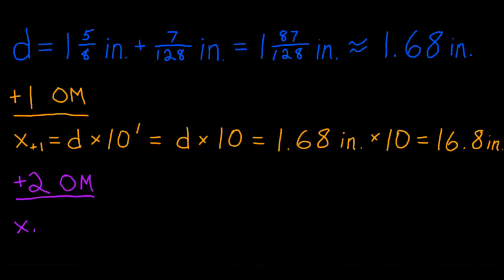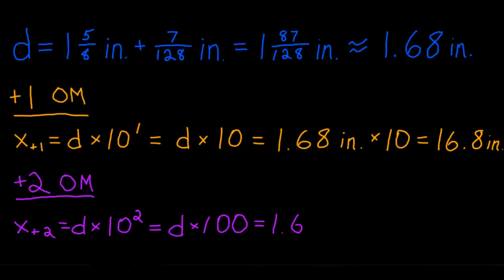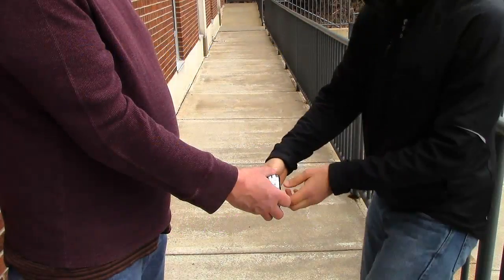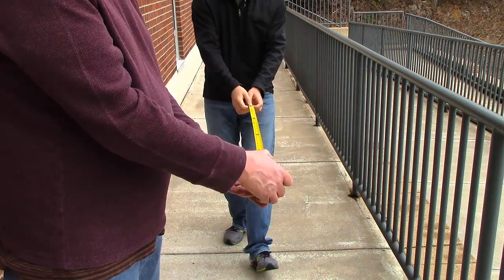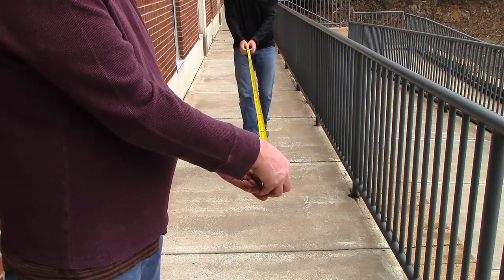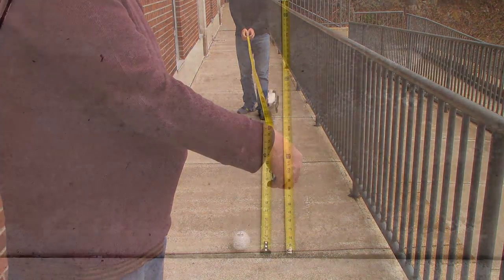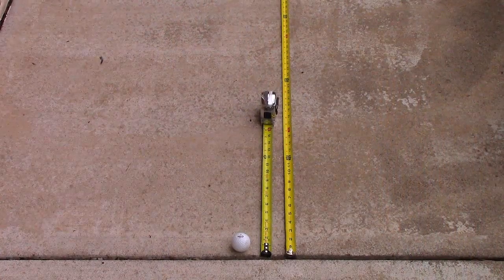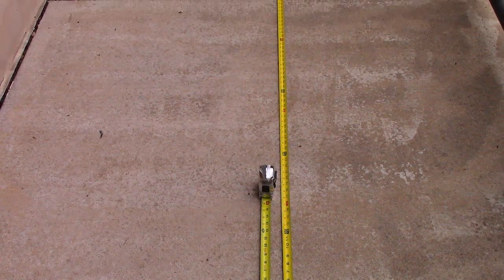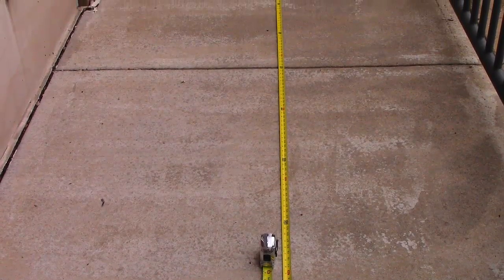To calculate the size two orders of magnitude larger than the golf ball's diameter, we multiply the diameter by 10 to the second power, or 100, which equals 1.68 inches times 100, or 168 inches. This is the same as 14 feet. To show how long 14 feet are, you can use a second tape measure, as long as you have enough room. Finally, you can place the golf ball next to the two tape measures to show visually differences of one and two orders of magnitude.